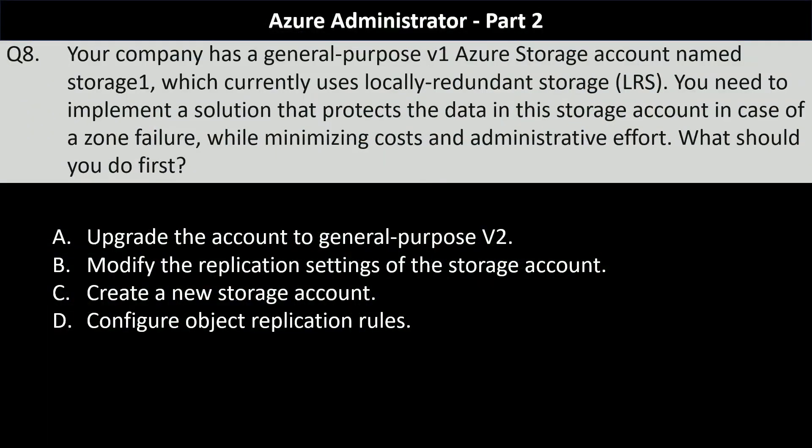This is question number eight of the series. Your company has a general purpose v1 Azure storage account named Storage1, which currently uses locally redundant storage. You need to implement a solution that protects the data in this storage account in case of a zone failure, while minimizing costs and administrative effort. What should you do first? Your options are: upgrade the account to general purpose v2, modify the replication settings of the storage account, create a new storage account, or configure object replication rules.